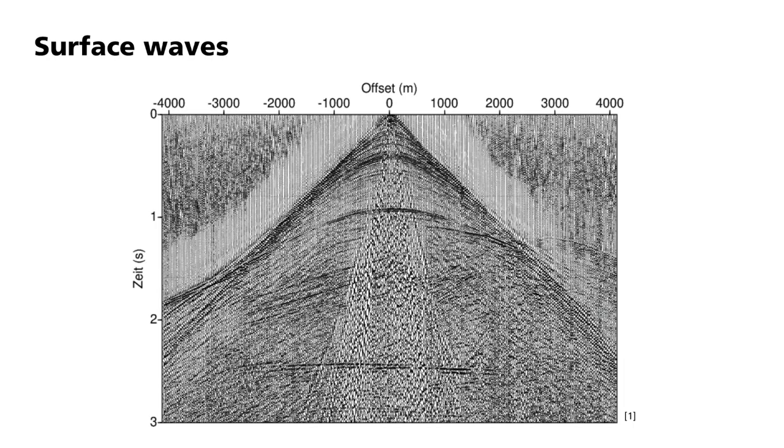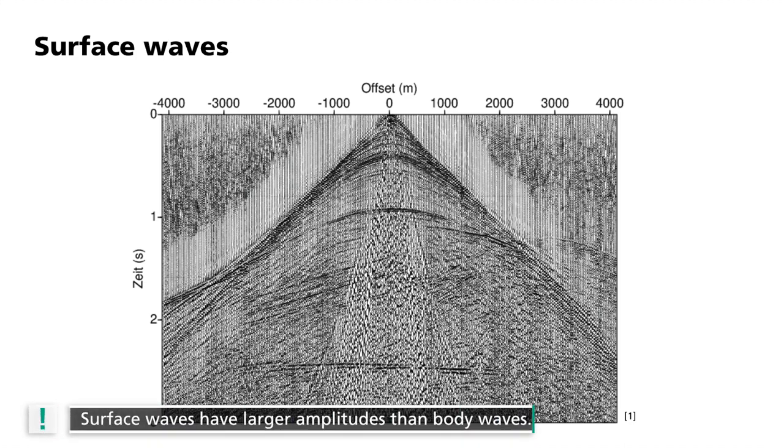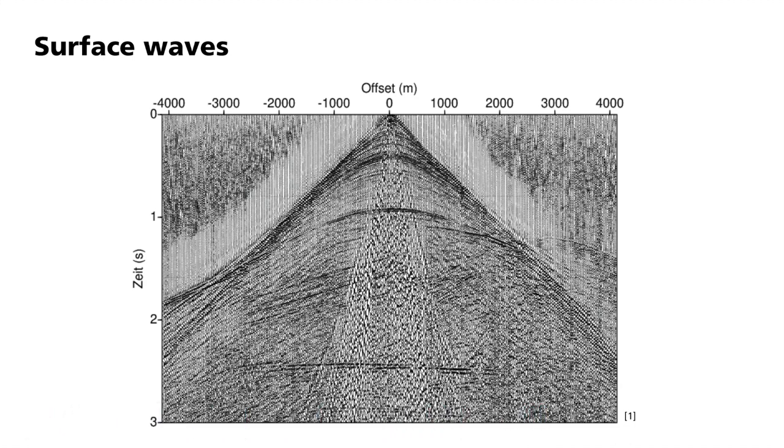In the introductory example, I have shown recordings of vertical geophone components, and you have seen that surface waves have larger amplitudes than body waves. Within the area of application of reflection and refraction seismics, surface waves sometimes overlap important body wave phases so that they must be suppressed during processing.